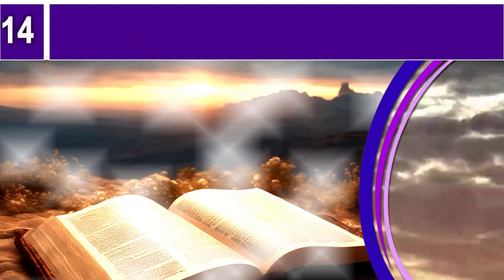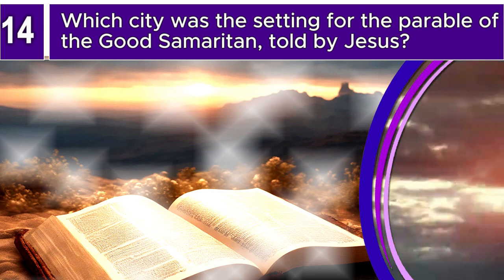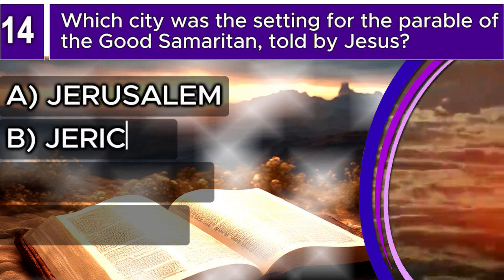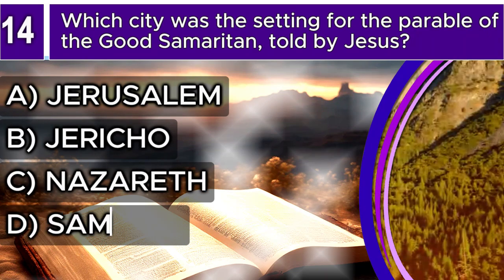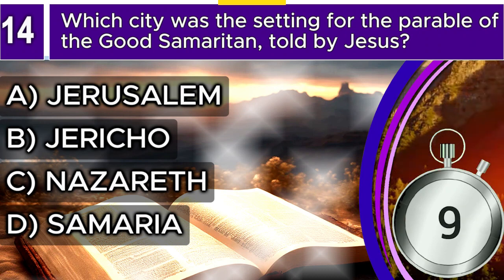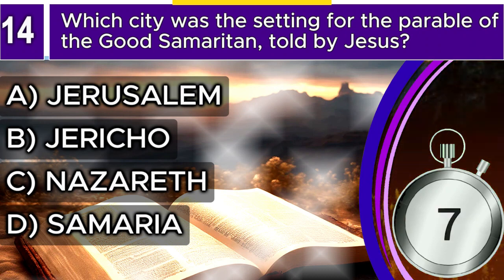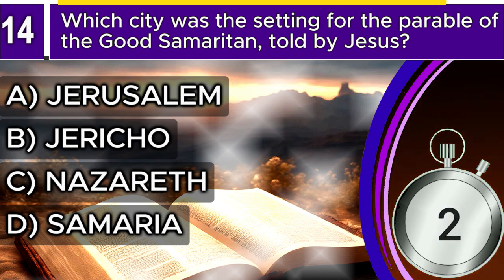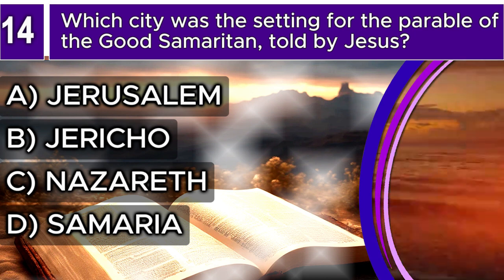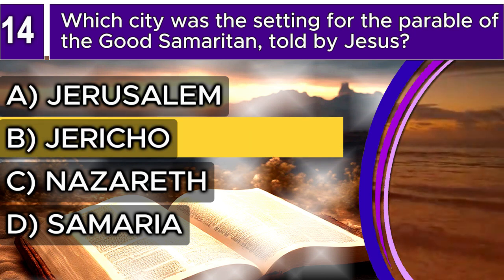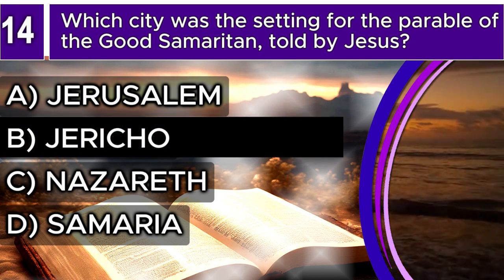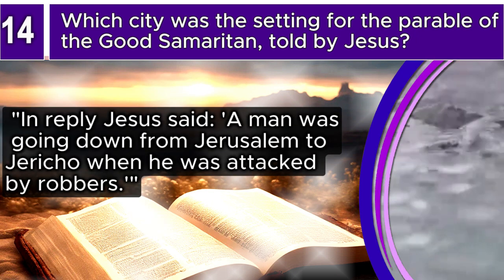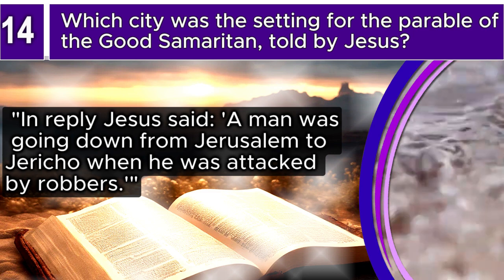Question 14. Which city was the setting for the parable of the Good Samaritan told by Jesus? A. Jerusalem, B. Jericho, C. Nazareth, D. Samaria. The correct answer is B. Jericho. Luke 10, verse 30 says: In reply Jesus said, A man was going down from Jerusalem to Jericho when he was attacked by robbers.